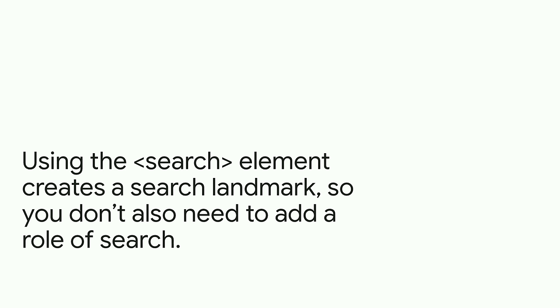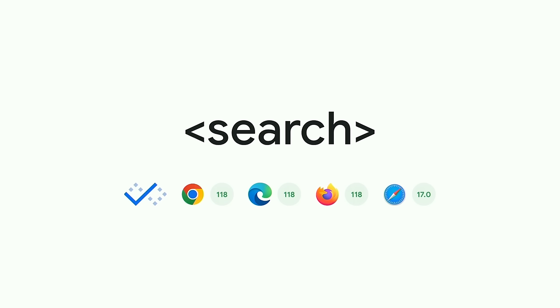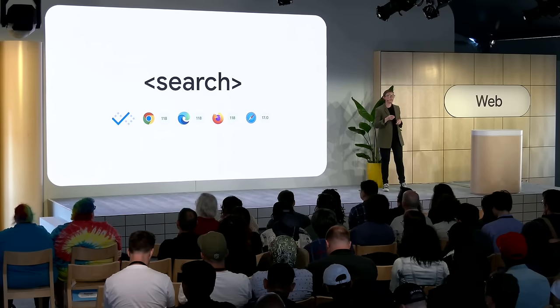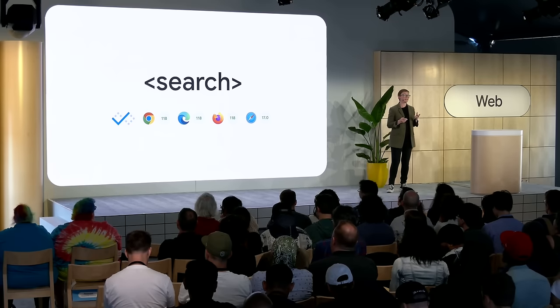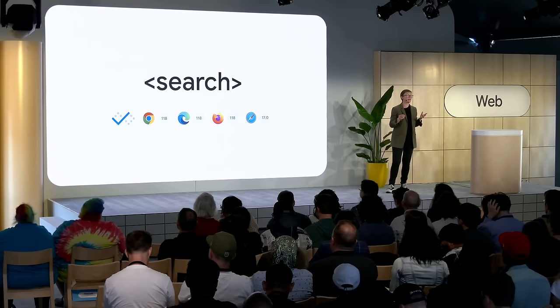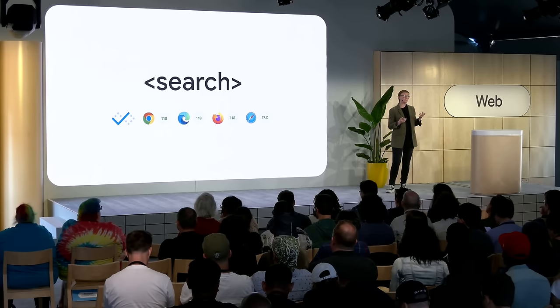The search element creates a search landmark, so you don't need to add an ARIA role of search to indicate the purpose of the area to assistive technology. It shouldn't be used to contain search results, but it's valid to have more than one search element on one page — for example, a search element in the header for site-wide search and another for a filtering widget on a large table of data. As with other HTML elements, there's no problem with adding the search element to your pages right now; non-supporting browsers will just treat it like an unknown element and display the contents like a div. You'll probably want to double it up with a role of search on the form until the search element is classed as widely available.